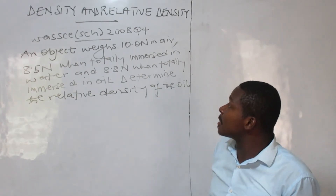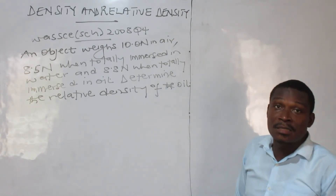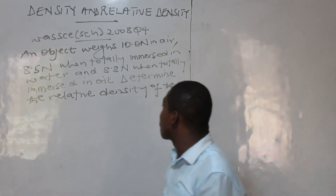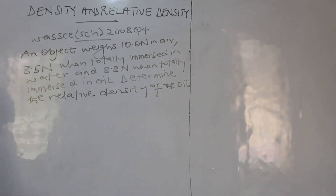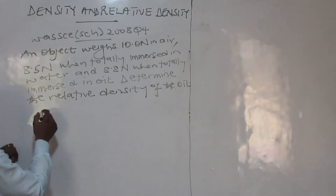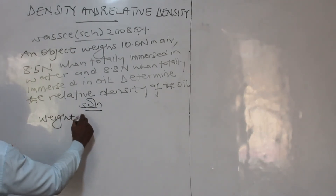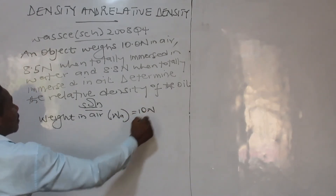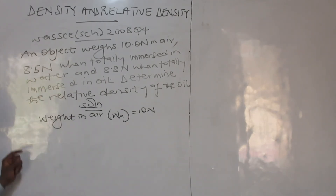So let's look at this sample wire question. We are still on pure physics, made for pure science students. This is a typical question in pure science where you see Archimedes' principle a lot. An object weighs 10 Newton — that is the weight in air. Anytime you are given a question, the best thing to do is to list the parameters out, then quote a relevant formula and attack the formula.